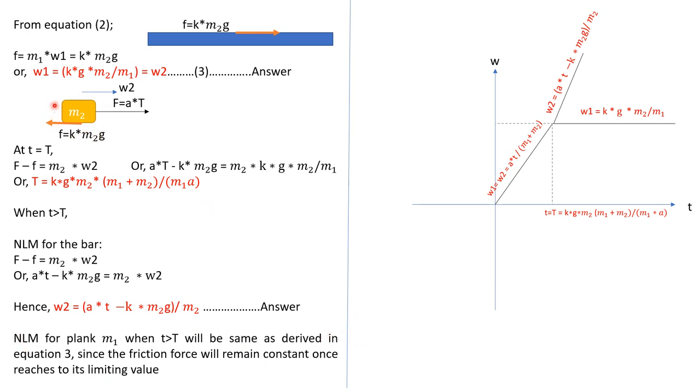But this block, the bar, acceleration will change. Why? Because here now small t is greater than T. So f minus f equals m2 times w2. Put the value f equals a times t, friction force k times m2g, m2 times w2. So w2 will be this. So these three expressions what we got in the red color, we can use to make the graph.